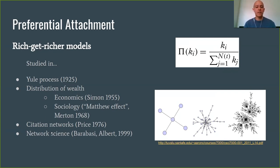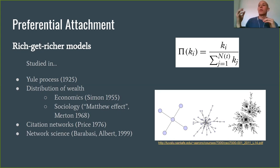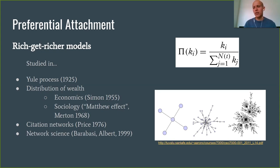Preferential attachment was originally studied to describe how species are distributed in different genera of plants: if there are already many species in a genus, there's a higher probability of further differentiation. In citation networks, a paper that has already been cited has a higher probability of being encountered, so a few papers start gaining a lot of attention. This sort of mechanism has been used to describe how citation networks grow.